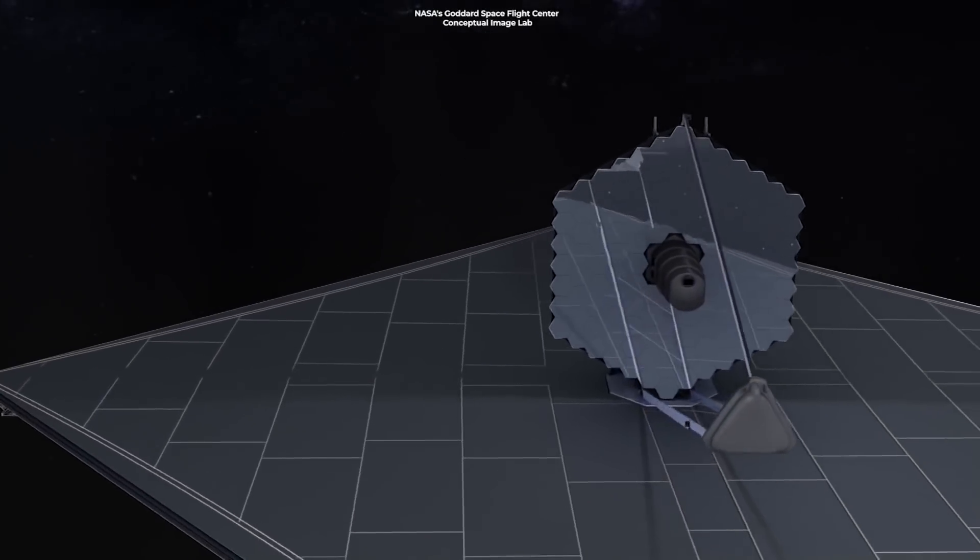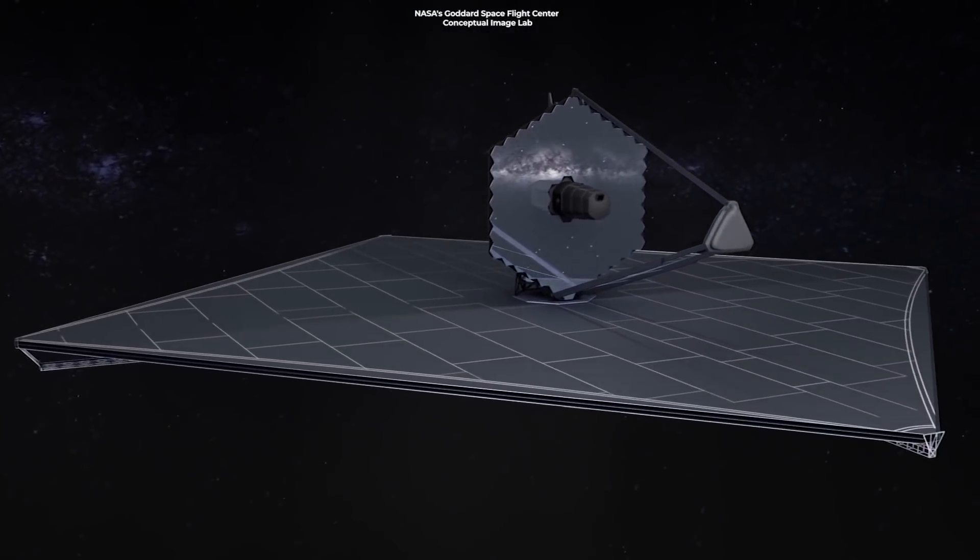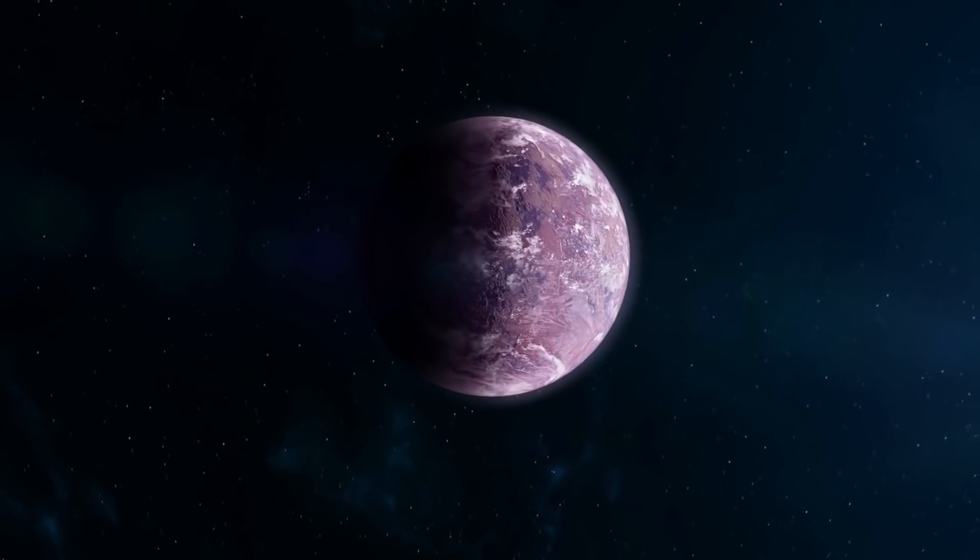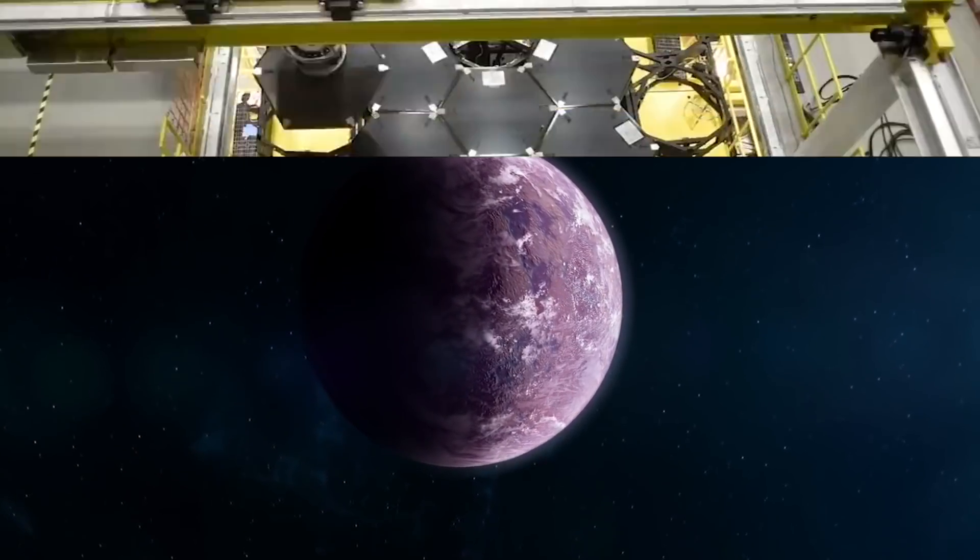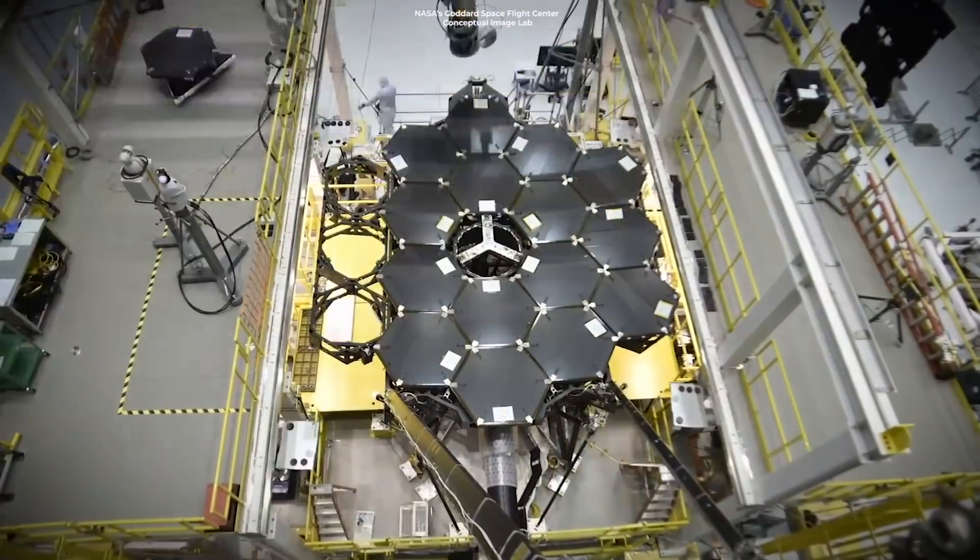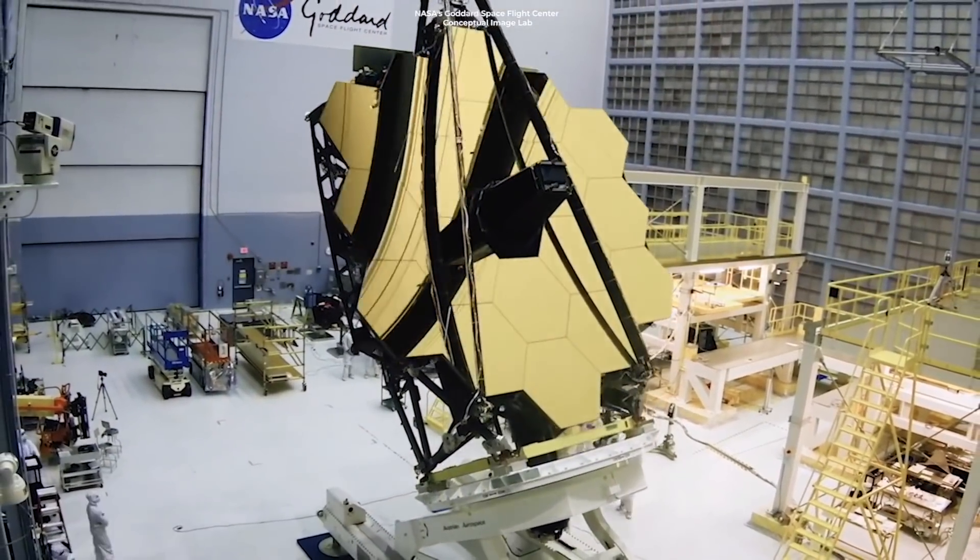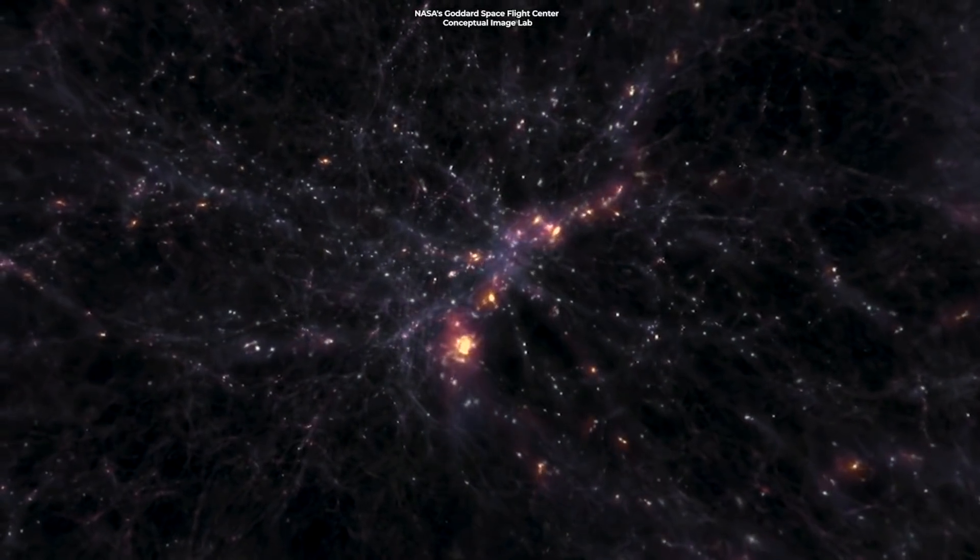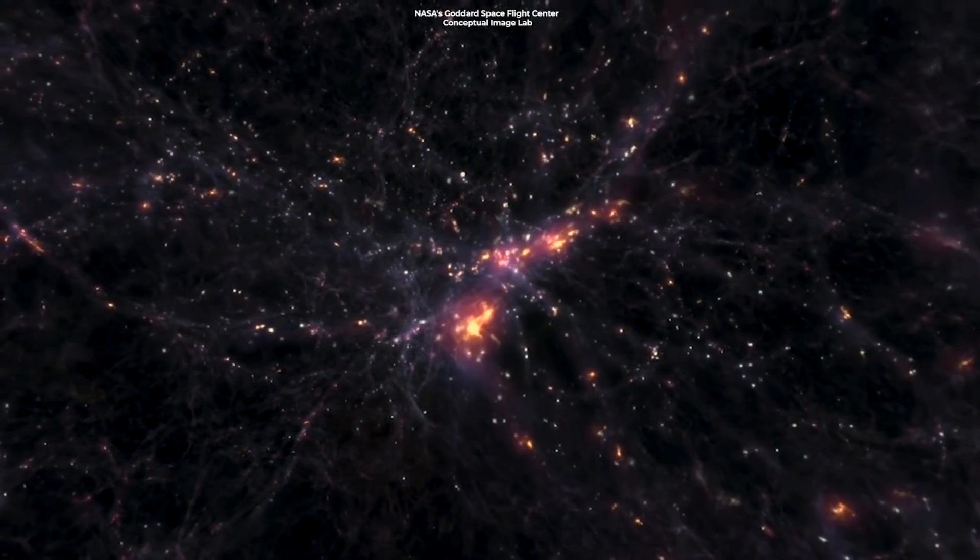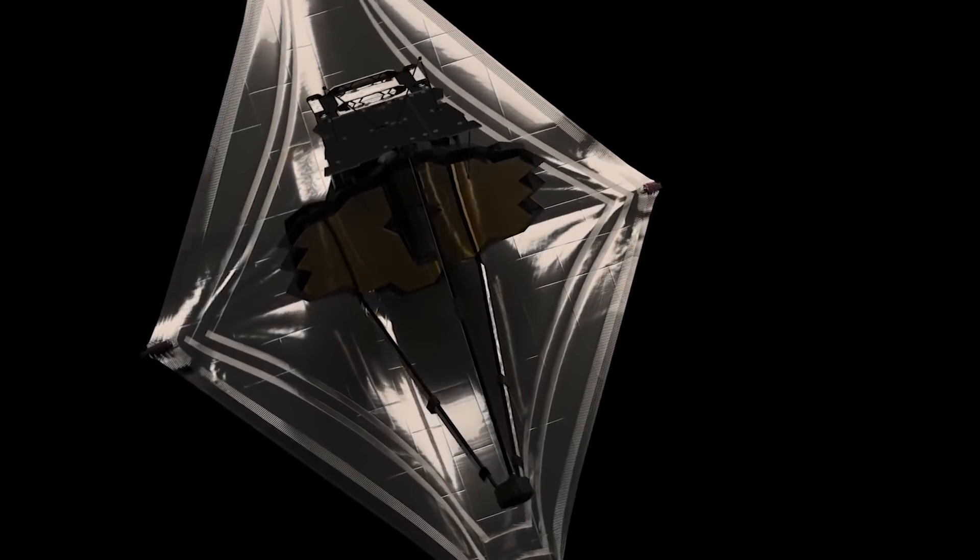The LUVOIR design integrates three principles to achieve the extraordinary wavefront stability required for chronographic studies of Earth-like exoplanets. First, vibrations and mechanical disturbances are kept to a minimum throughout the observatory. Second, both the telescope and the coronagraph use active optics to regulate several layers of the wavefront. Third, to control thermal disturbances, the telescope is actively heated to precise 270 Kelvin or 3 degrees Celsius.